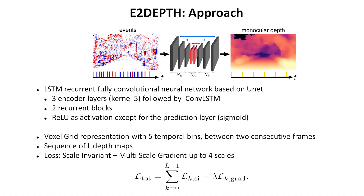We propose a recurrent architecture to leverage the temporal consistency in the event input. Our network is based on the U-Net architecture. Events are encoded in a spatial-temporal voxel grid using five bins. We train the network in a supervised fashion by minimizing the scale-invariant and multi-scale gradient loss.